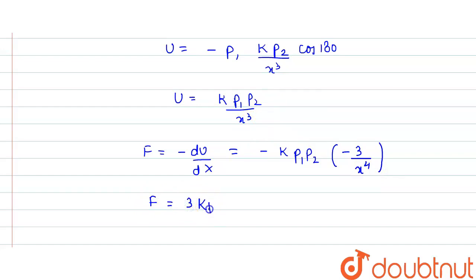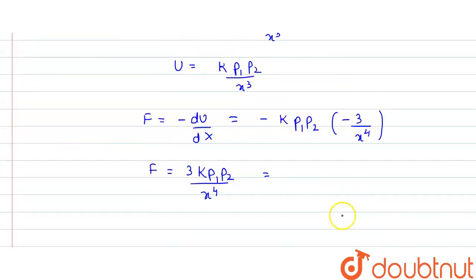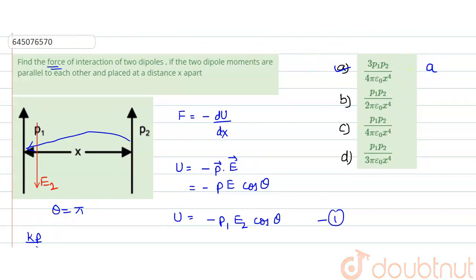So the force value turns out to be F = 3kp1p2/x⁴. Substituting k = 1/(4πε₀), we get F = 3p1p2/(4πε₀x⁴). Checking the options, this corresponds to option A. Hope you understood the solution.